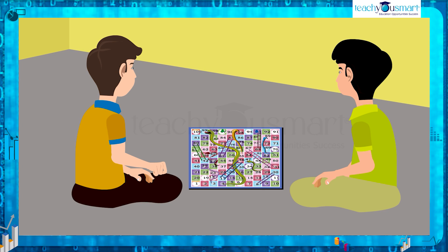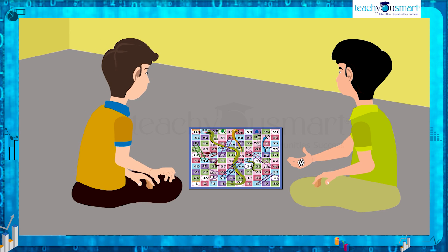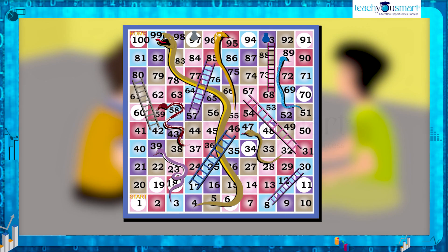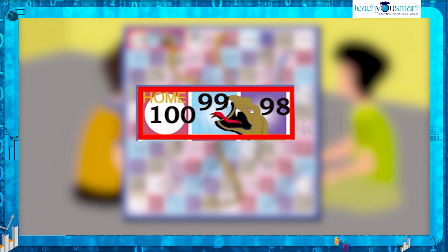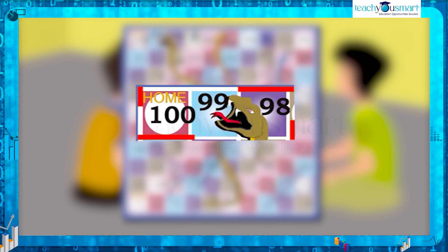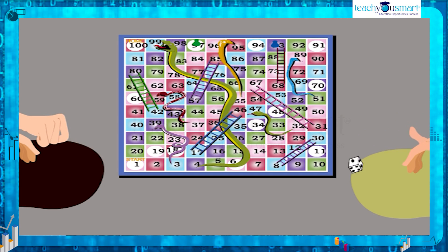Jackson and Tommy are friends. One day Jackson was playing a Snake and Ladder game with Tommy. Jackson has to cross only three places to win and it is his turn to throw the die. He needs to get number three to win the game. Will he get the number three?